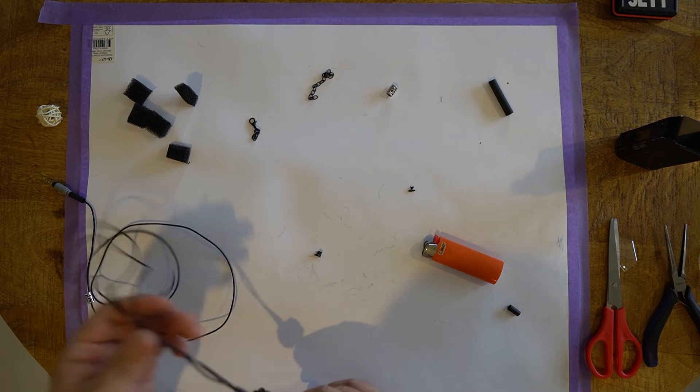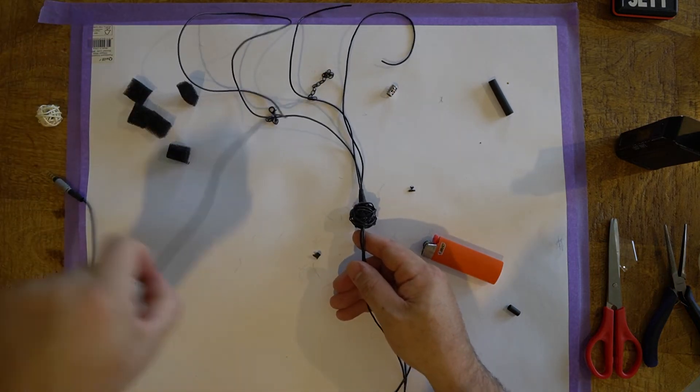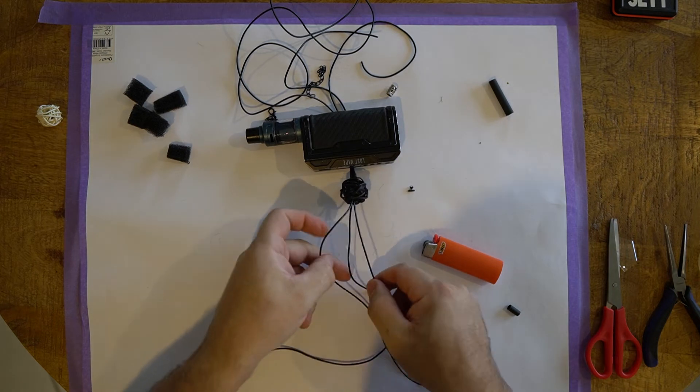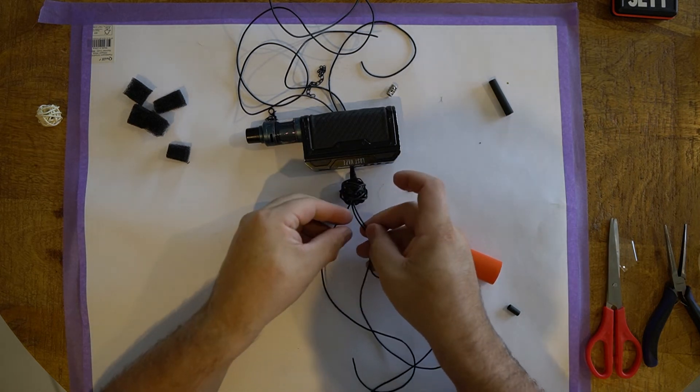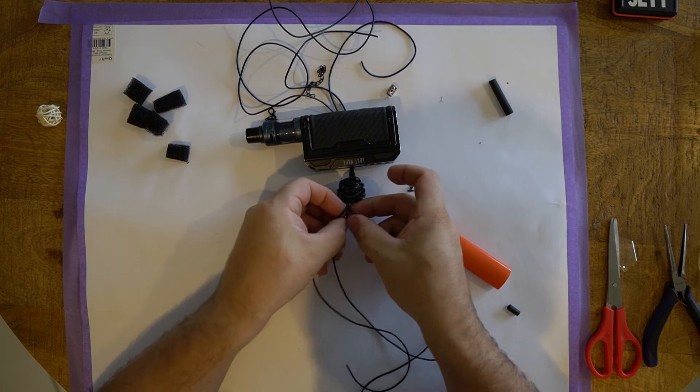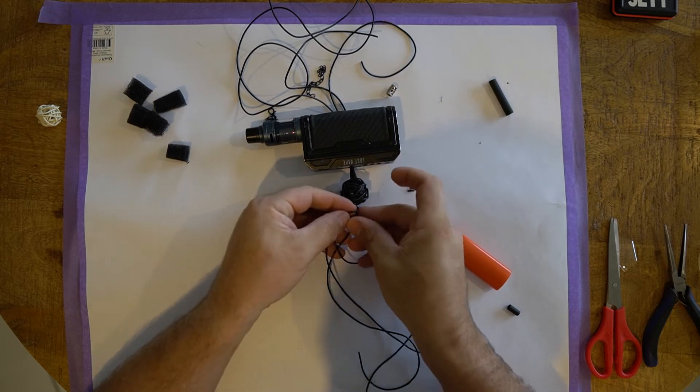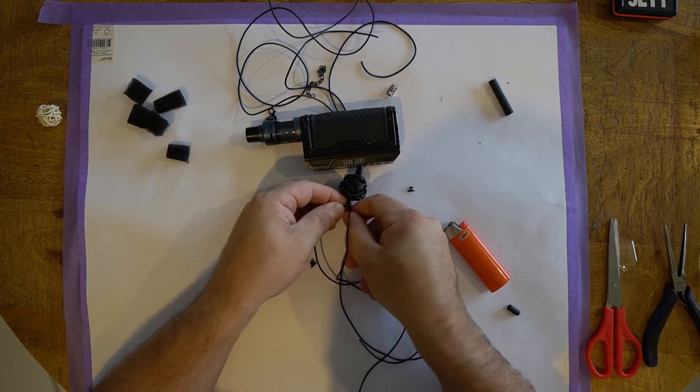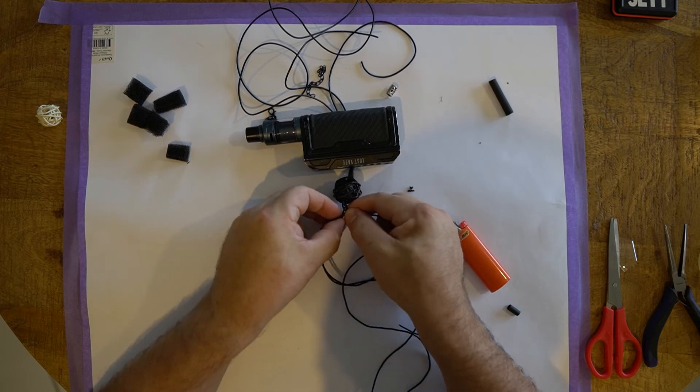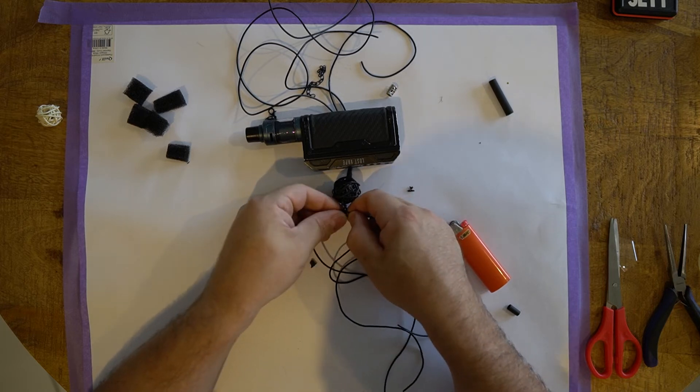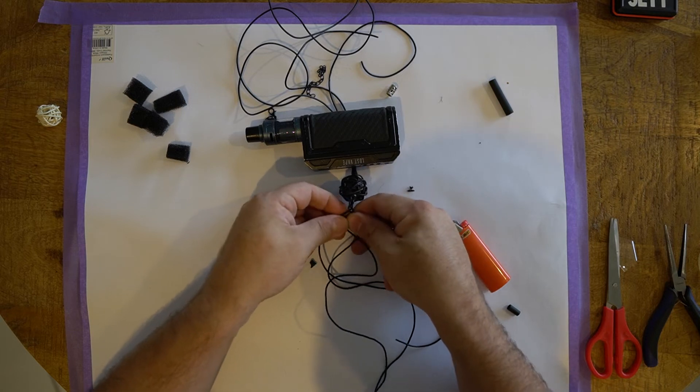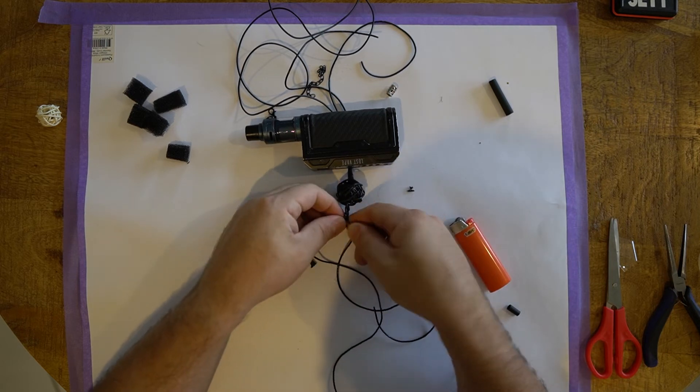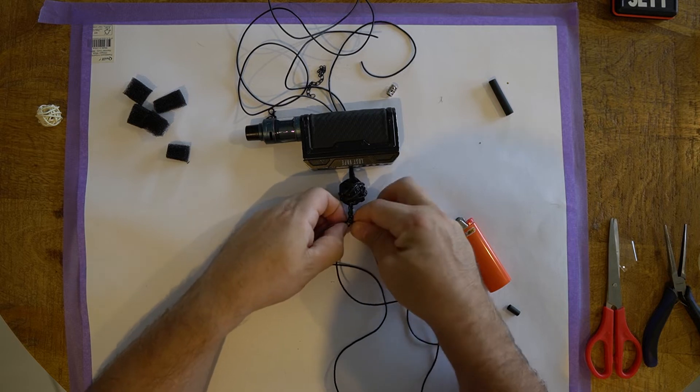Next thing we're going to do here is start braiding. For the braiding it does help to have a bit of tension, so I'm just going to use that as a weight. And then it's just a simple plait. If you've got kids and you've got daughters, there's a fairly good chance that you'll know how to do this.